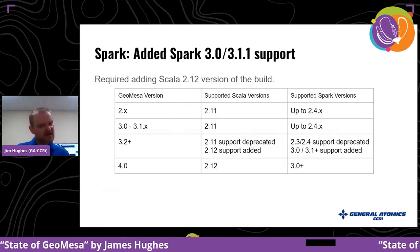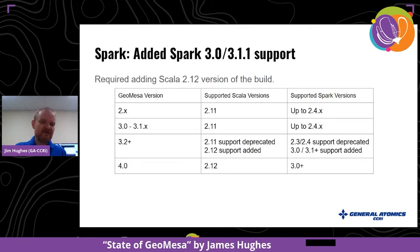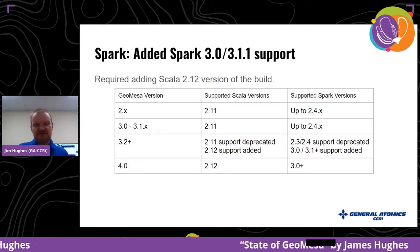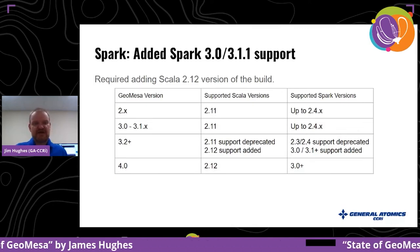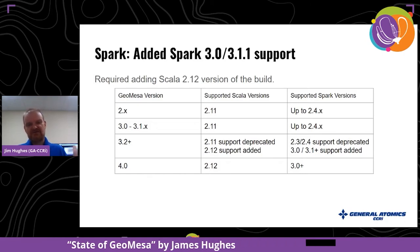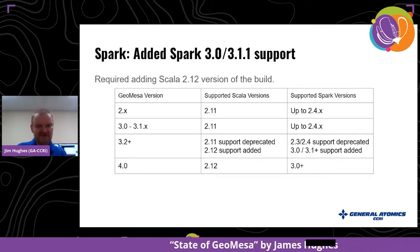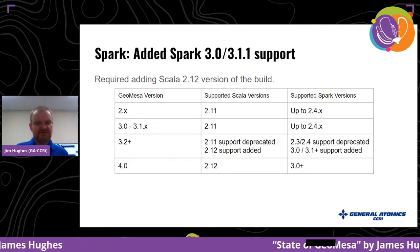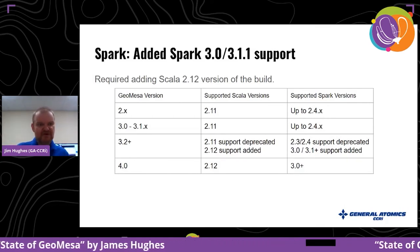Scala and Spark are lined up together — Spark has a default version of Scala it's compiled for. Spark 2.3 or 2.4 was compiled against Scala 2.11, while Spark 3 is against Scala 2.12. So in adding Spark 3 support we added Scala 2.12 to the build, which means we have to create two copies of every artifact. When we talk about GeoMesa 4.0, we'll drop Scala 2.11 support, which also means Spark 2.x support will go away.